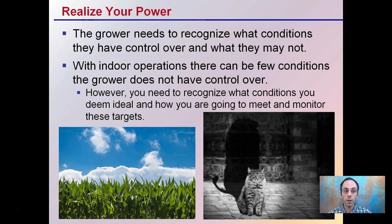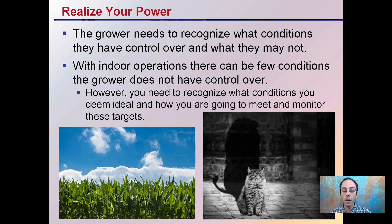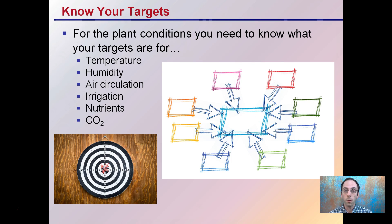You've got to realize your power as a grower — what conditions you have control over and what you do not. With indoor operations there are very few conditions a grower does not have control over. However, you need to recognize what conditions you deem ideal and how you're going to meet and monitor those targets. If you're growing outdoors you have a lot less control. Indoors — like the picture of the cat and the lion in the shadow — you have a lot more control, but you've got to know what you want your growing area to be.